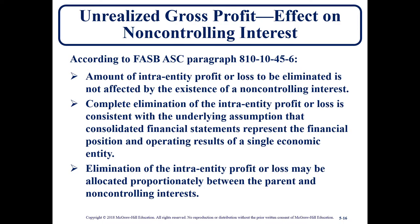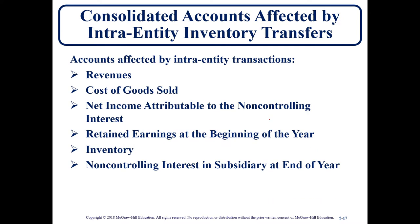In our previous presentation, we talked about sales being downstream or upstream — downstream from parent to subsidiary, upstream from subsidiary to parent. In terms of FASB codification 810-10-45-6, a downstream sale has no effect on the non-controlling interest net income, but if it's upstream, it will have an effect on the non-controlling interest net income. The accounts affected by intra-entity transactions in terms of inventory are the six accounts listed here on this slide.